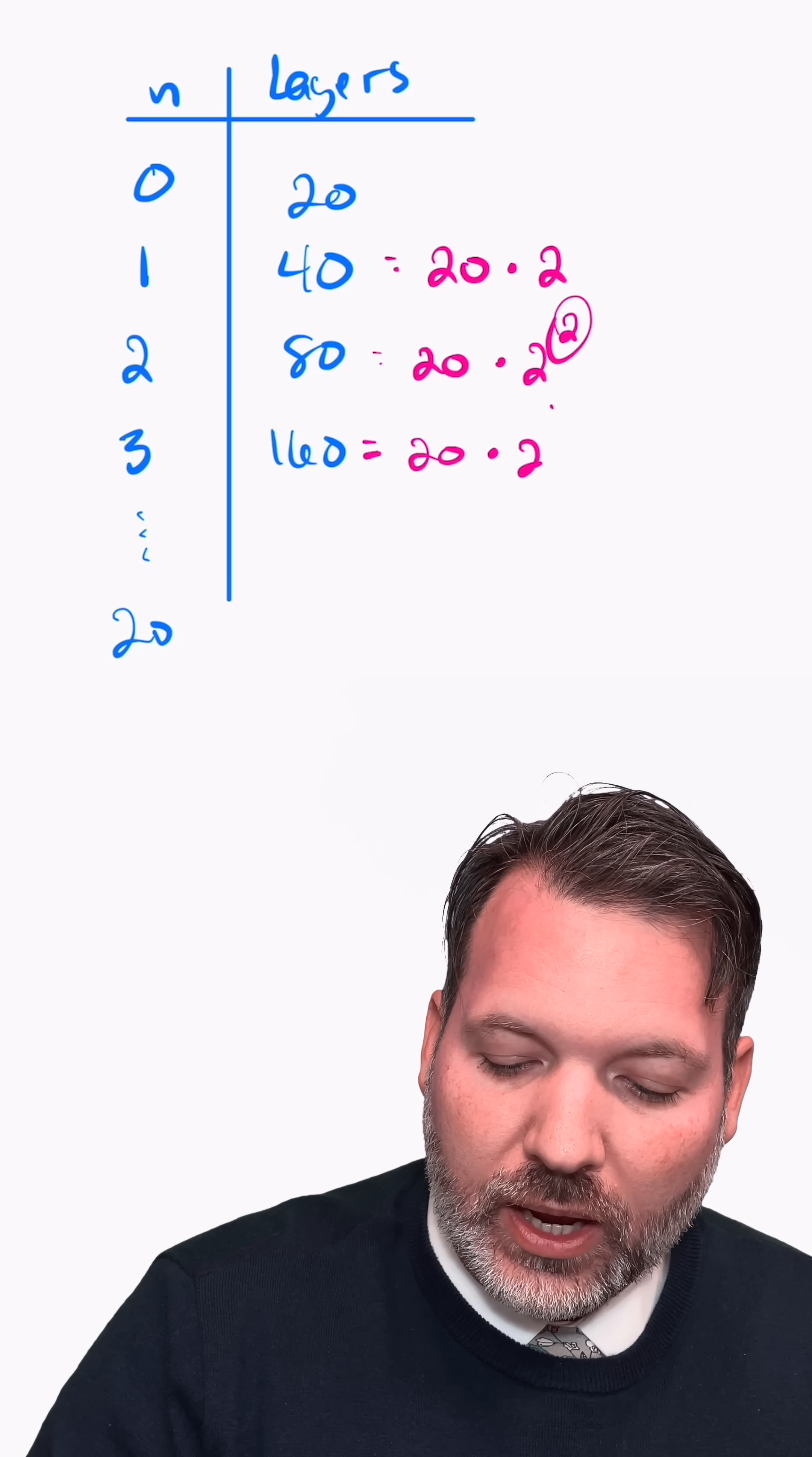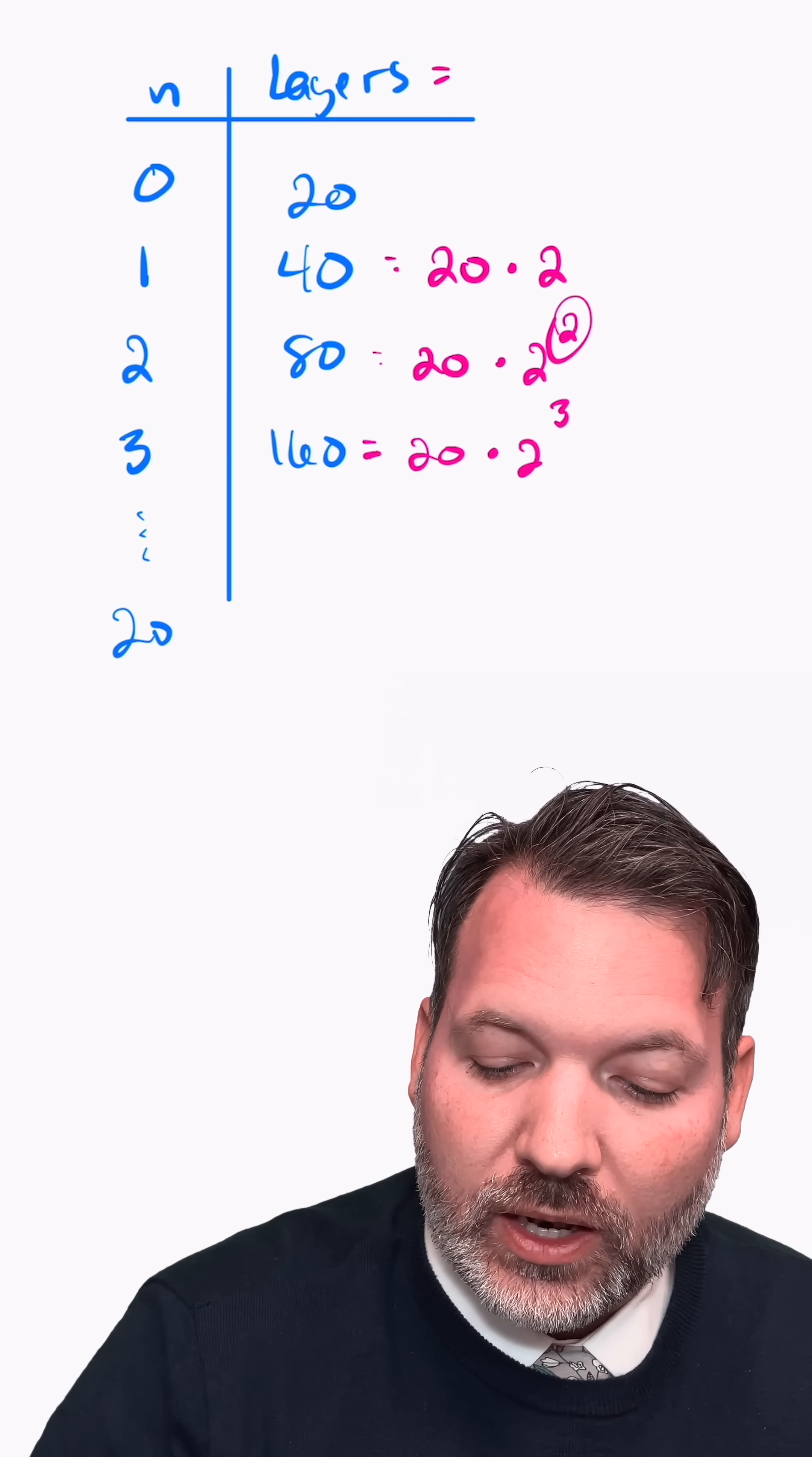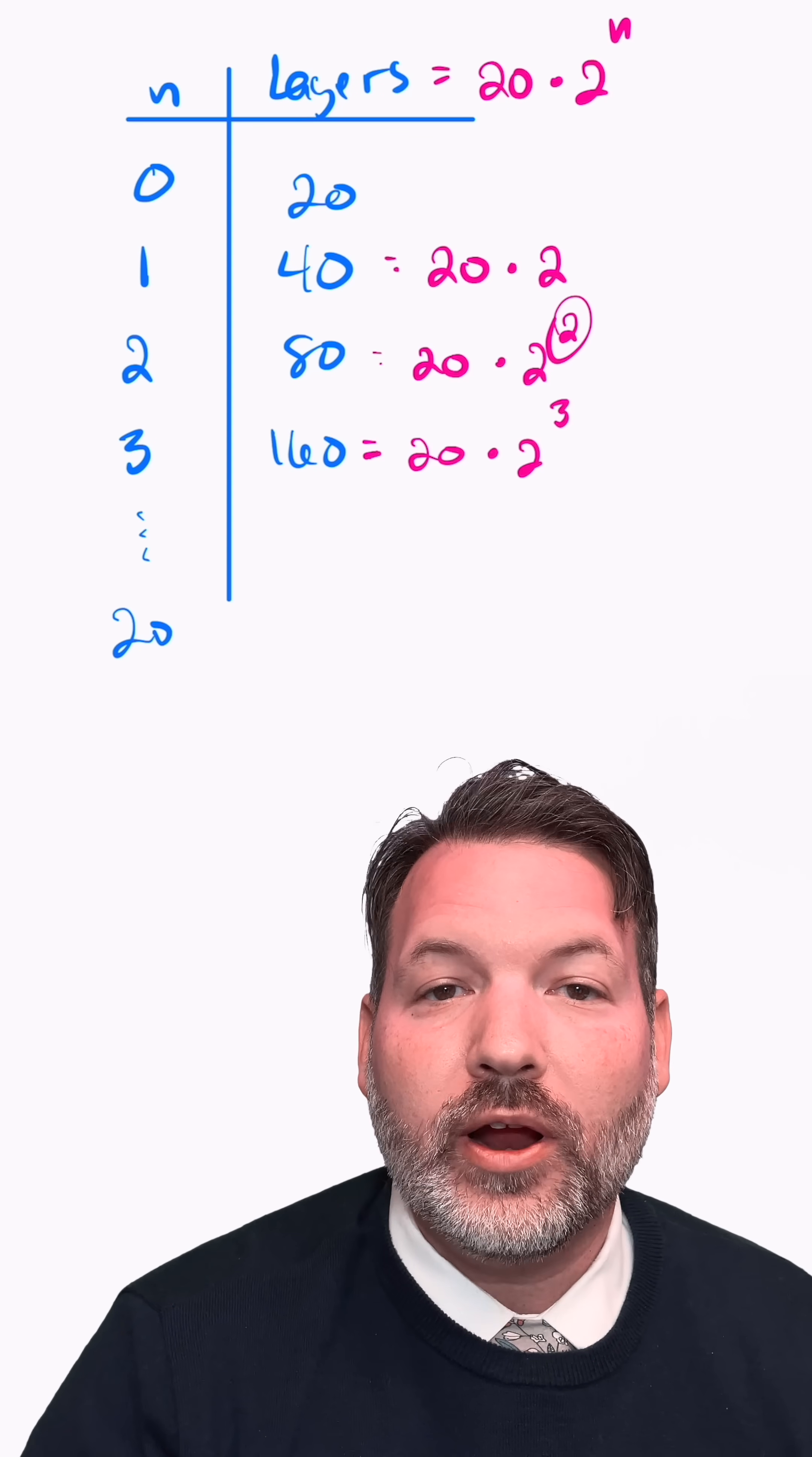This means after three cuts, we're looking at 20 times two to the third. Two to the third is eight and 20 times eight is 160. So it appears that this is working. In general, we can say that the number of layers will be 20, that is the initial number of layers that we had, times two to the nth power where n is the number of cuts.